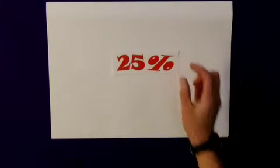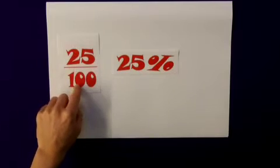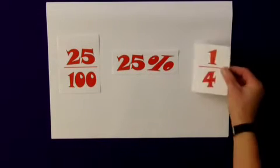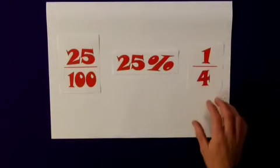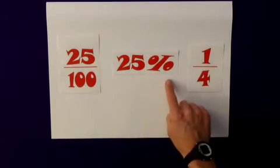Other typical percentages that we know, 25%, well, again, 25 out of 100, we know our equivalent fraction, that's actually a quarter, so we'd simply divide our whole amount by 4 to find 25%.